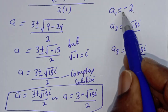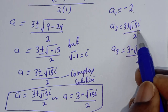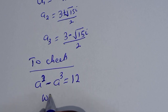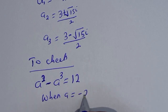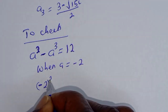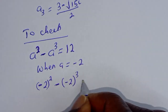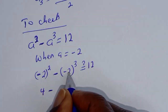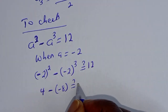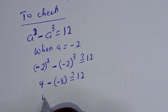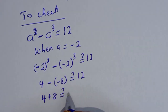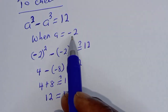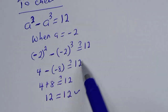Let's verify our real solution. The only real solution is a = minus 2. Substituting into a squared minus a cubed: (minus 2) squared minus (minus 2) cubed equals 4 minus (minus 8) equals 4 plus 8 equals 12, which equals 12. This is true! Thank you for watching — don't forget to like, share, comment and subscribe. Bye bye.